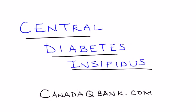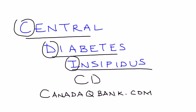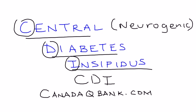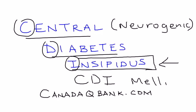Central Diabetes Insipidus, also abbreviated CDI, is the topic for this video. Central Diabetes Insipidus is also sometimes known as Neurogenic Diabetes Insipidus. Keep in mind that this word insipidus is different than mellitus. Mellitus is the term you're used to hearing about diabetes — that's the regular type of diabetes. This is insipidus, so this is different.